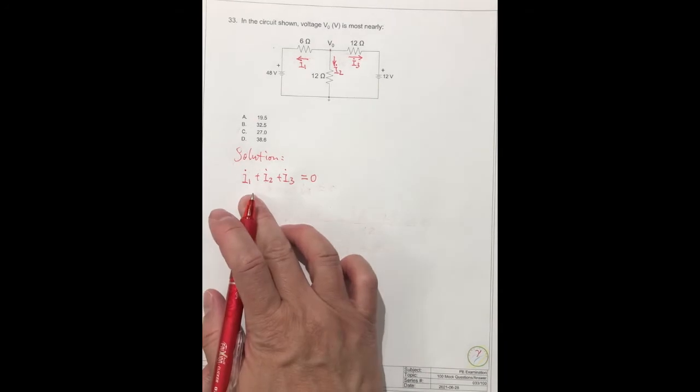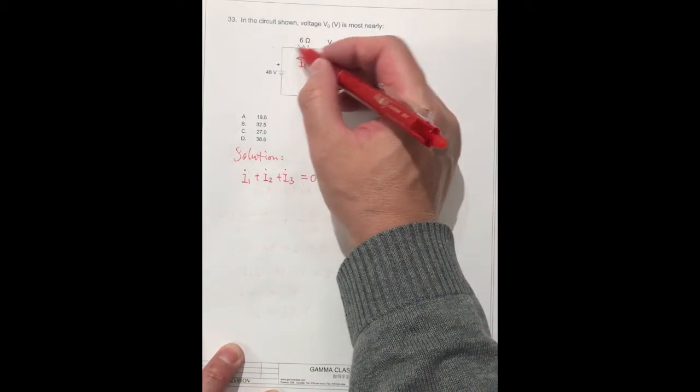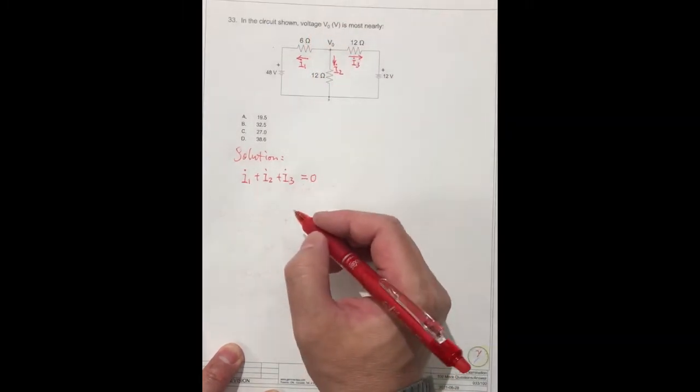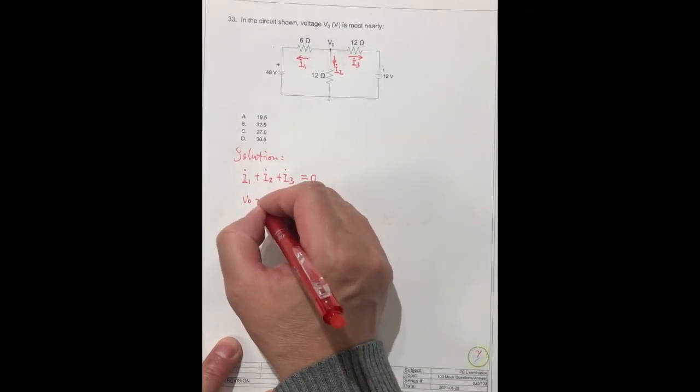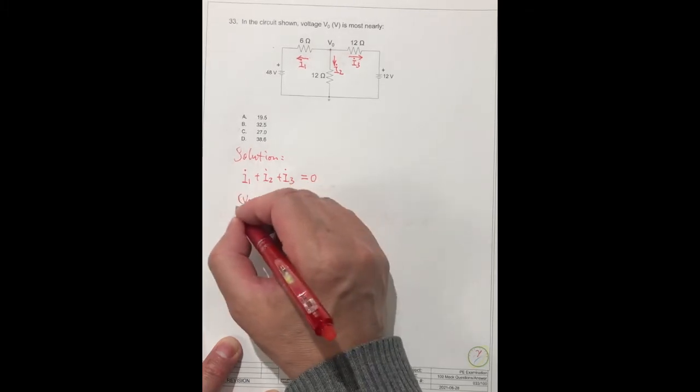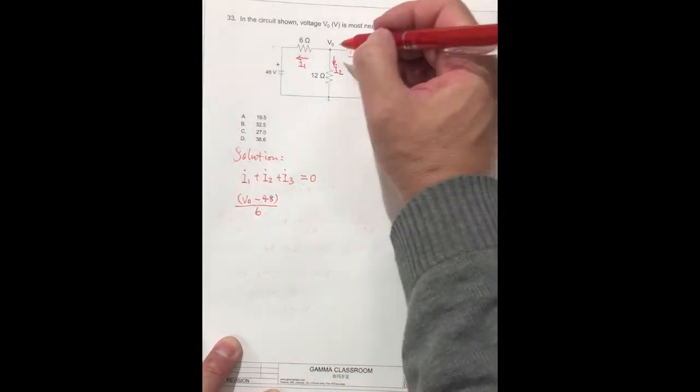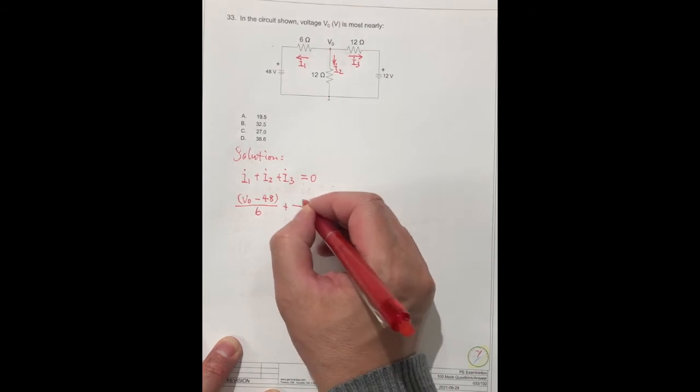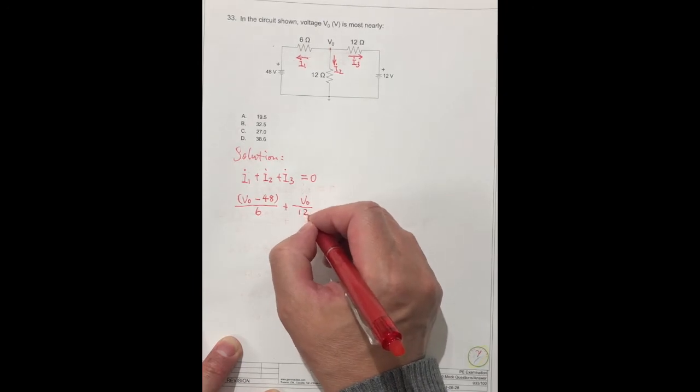So I1, what is I1? It's this voltage difference divided by the resistor. So I1 is V0 minus 48, divided by the resistor 6. And this one I2 is V0 plus V0, divided by resistor 12.